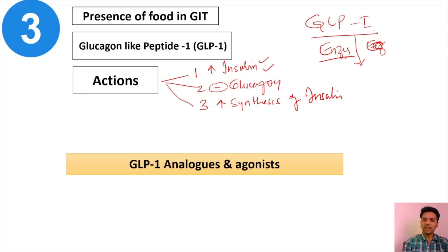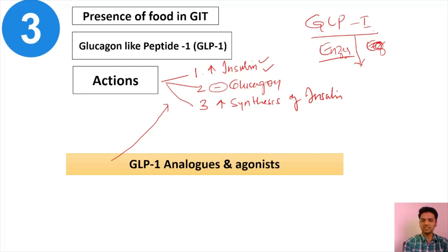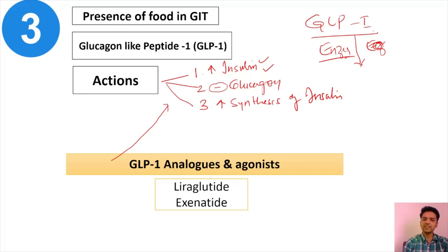However, GLP-1 released from the GIT is immediately degraded by an enzyme, so its half-life is very limited. Therefore, we have developed drugs called GLP-1 analogs and agonists, which are not degraded by the enzyme and stay in the gut for a longer duration. They have the same three actions as GLP-1. Examples include liraglutide and exenatide.